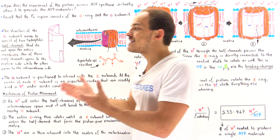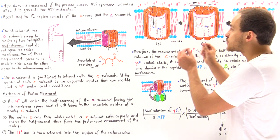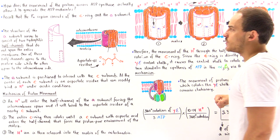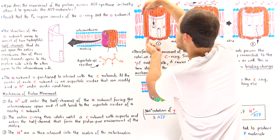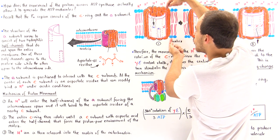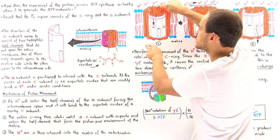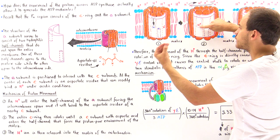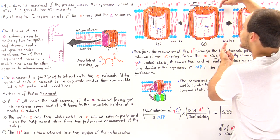Once the H+ binds onto the aspartate residue, we form aspartic acid. Aspartic acid is not as hydrophilic as aspartate — it is more hydrophobic. Because aspartic acid is more hydrophobic, it wants to move into the hydrophobic region of the inner membrane of the mitochondria. So that C subunit tends to rotate — let's say in the clockwise direction — and as this C subunit rotates, it causes the entire C ring to rotate with it.